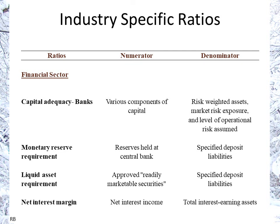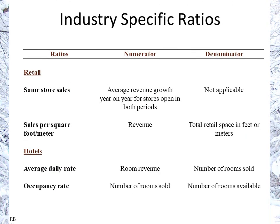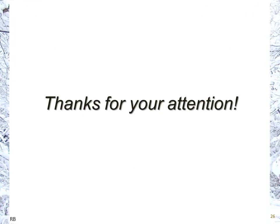Each industry has specific ratios. Banks use capital adequacy ratios measuring risk-weighted assets, market risk exposure, operational risk, monetary reserve requirements, liquid asset requirements, and net interest margin (interest income over interest-earning assets). Retail uses same-store sales and sales per square meter or square foot. Hotels use average daily rate and occupancy rates. That concludes this quick overview of ratio analysis.